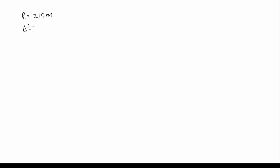In this question, a steel tape is correct at 20°C. On a day when the temperature is 45°C, the reading is 210 meters. So delta T is equal to T2 minus T1, that is 45 minus 20, which is 25. Alpha is given as 1.2 into 10 to the power of minus 5 inverse degree Celsius.